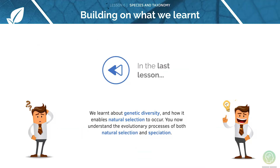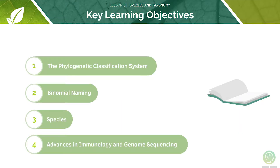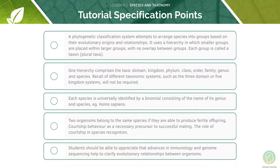In the last lesson we looked at genetic diversity and how it enables natural selection to occur. Here are the key learning objectives for today's lesson. The first is to look at the classification system, then we will cover the binomial naming and species. Finally we will look at advances in immunology and genome sequencing. Here are the AQA specification points for today's lesson — feel free to pause the video now and have a quick read through them before we begin.